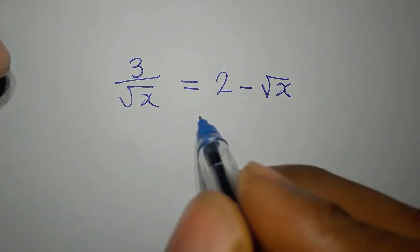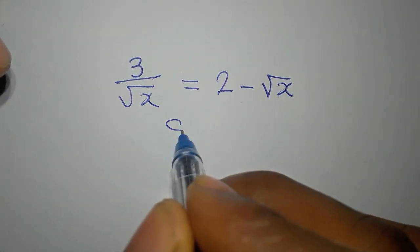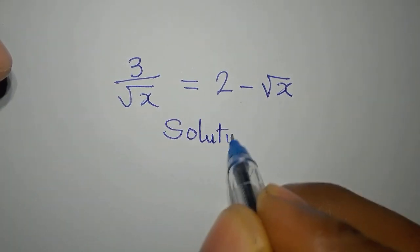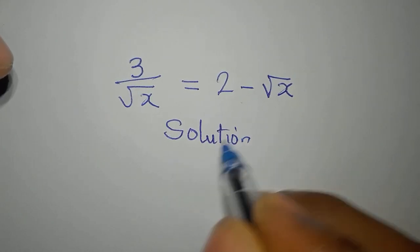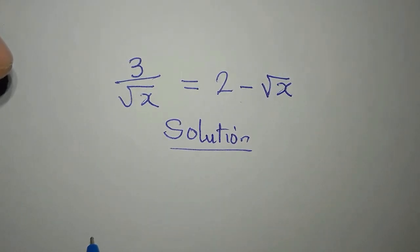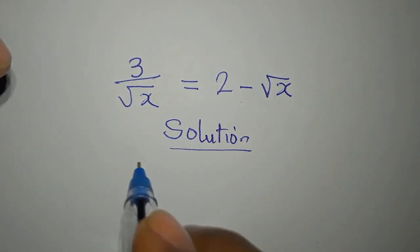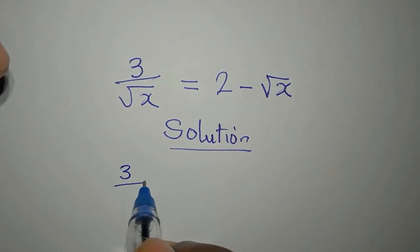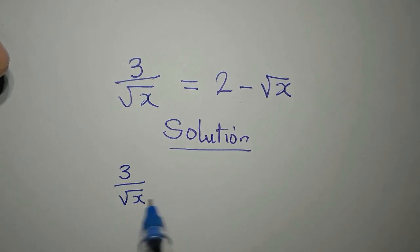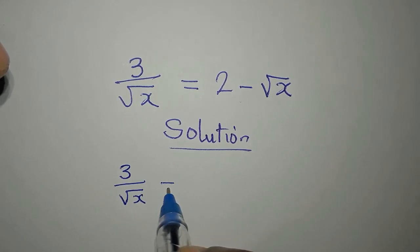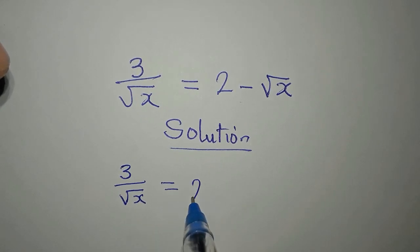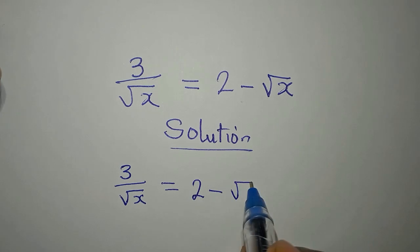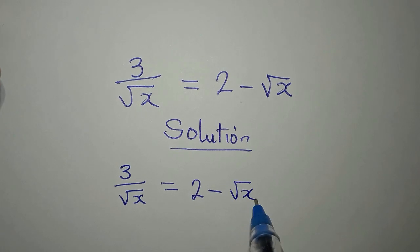Hello everyone, let's provide the solution to this problem: 3 over square root of x equals 2 minus square root of x.